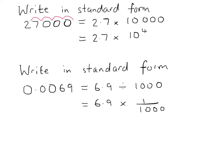Where 1 over 1,000 can be represented with a negative power or index, so it is 6.9 times 10 to the minus 3.